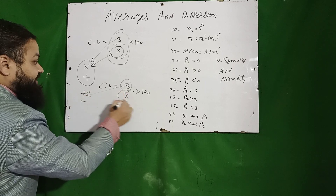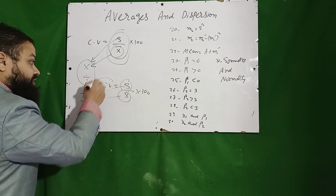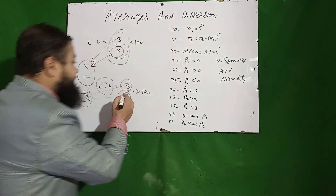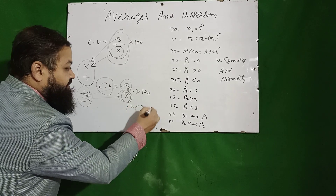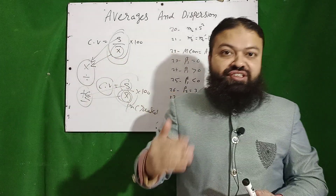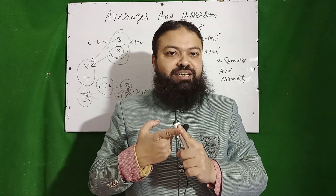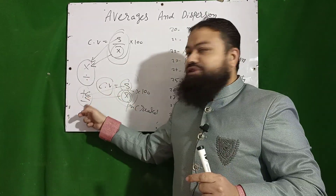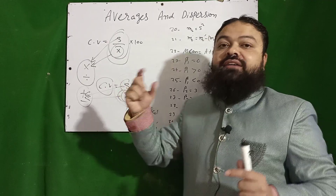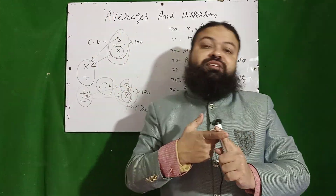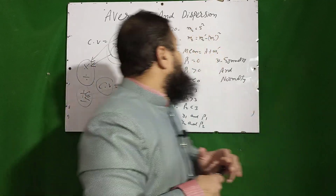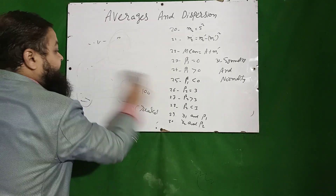However, for change of origin (plus or minus), the coefficient of variation is affected. If I add a constant value, the mean increases. When the denominator (mean) increases, the value of s/x̄ decreases — so coefficient of variation decreases. If I subtract a constant value, the mean decreases and coefficient of variation increases. Summary: coefficient of variation is independent of change of scale, but dependent upon change of origin.